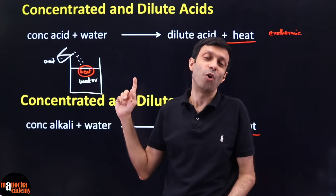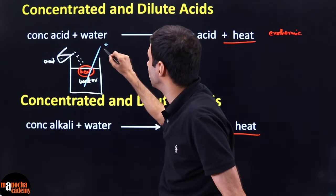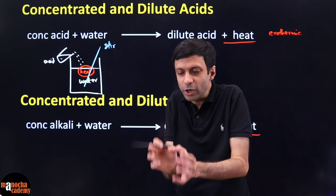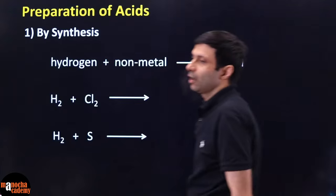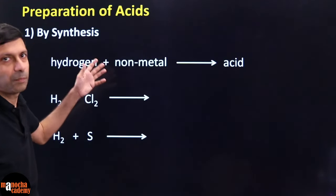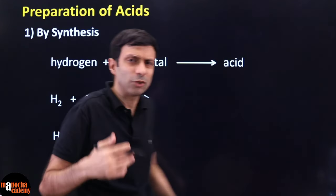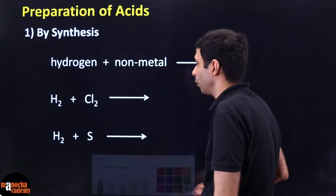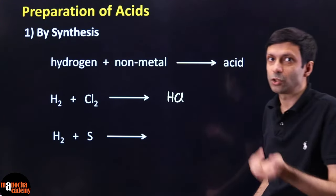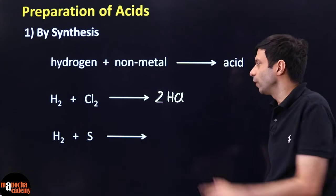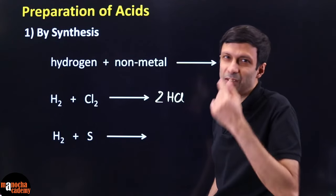How do you prepare acids? One method is by synthesis (combination reaction): hydrogen + non-metal → acid. For example: H2 + Cl2 → 2HCl (hydrogen chloride gas; dissolved in water gives hydrochloric acid). H2 + S → H2S (hydrogen sulfide, rotten-smelling gas). Another method is dissolving acidic oxides in water: SO2 + H2O → H2SO3 (sulfurous acid); SO3 + H2O → H2SO4 (sulfuric acid); CO2 + H2O → H2CO3 (carbonic acid).